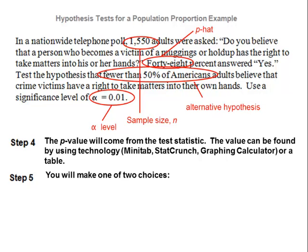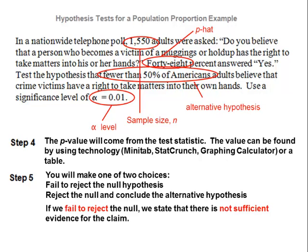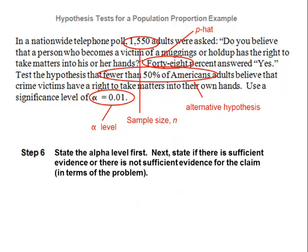Step five, once we have the p-value we make one of two choices: we either fail to reject the null, or we reject the null and conclude the alternative. If we fail to reject the null, we say there is not sufficient evidence for the claim. If we reject the null and conclude the alternative, we state there is sufficient evidence for the claim — the sample data supports either the null or the alternative hypothesis. Step six, we always start by stating the alpha level, then state whether there is or is not sufficient evidence for the claim, in terms of the problem.